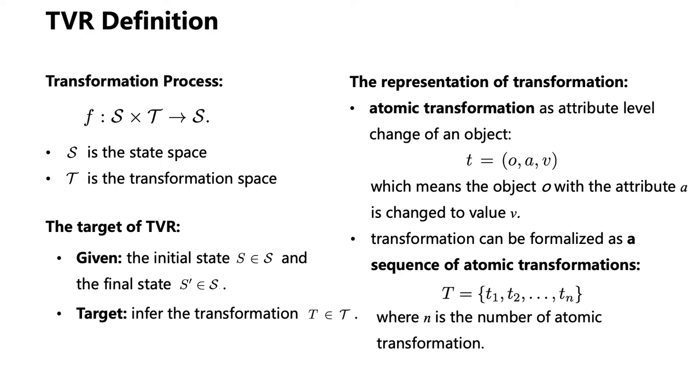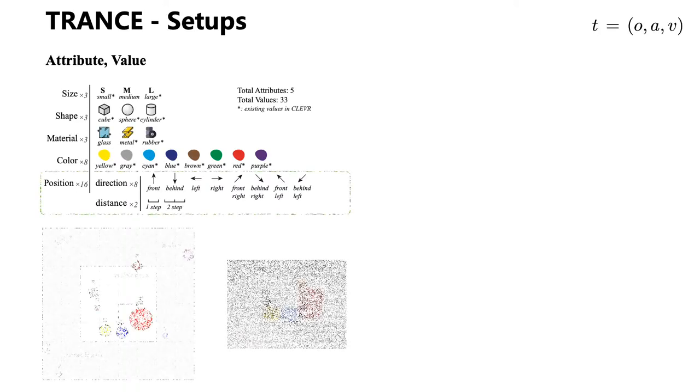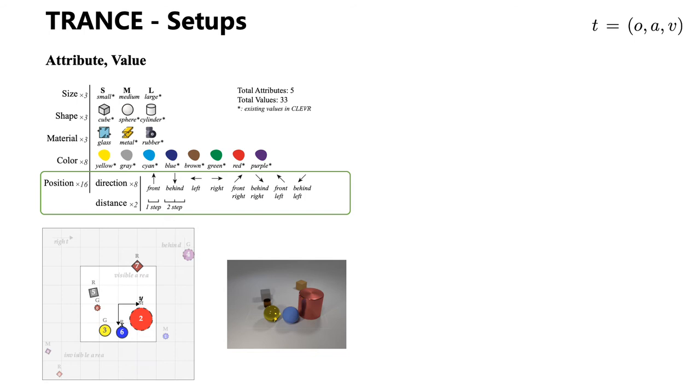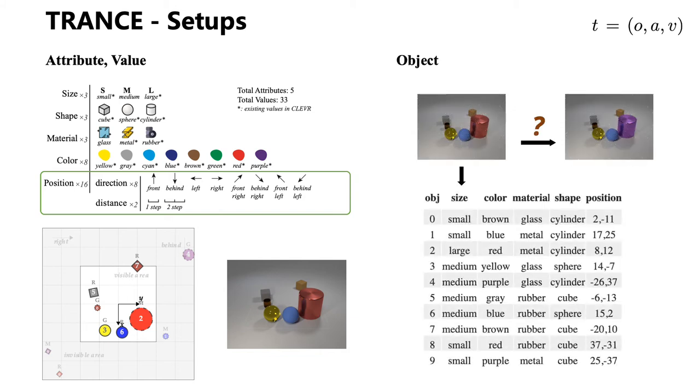According to this definition, we construct a new dataset called TRANS built on Clever. Let's see how we ground the three elements of the atomic transformation in TRANS. Most attributes and values are inherited from Clever, except some additional position transformations. To represent an object simply, we also provide an attribute of the initial state, so that an object in the image can be referred by its index.